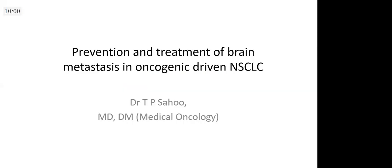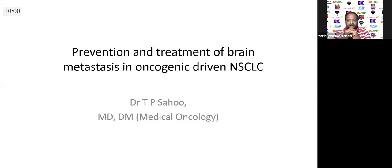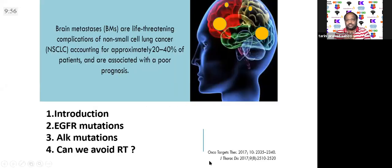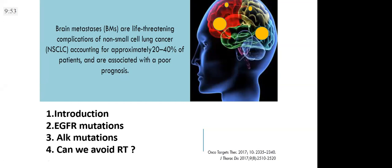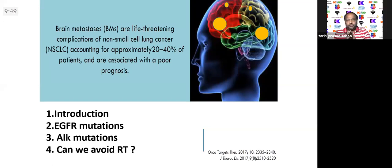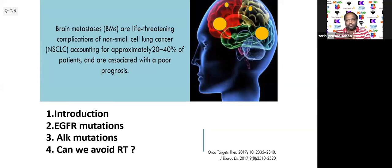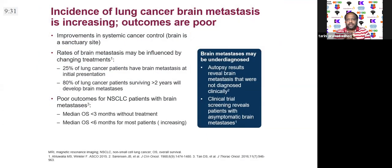Our next speaker is Dr. TP Sau. Good evening everyone — in the next 10 minutes I'll talk about the prevention and management post-radiotherapy for brain metastasis in oncogenic-driven NSCLC. I'll cover: an introduction, EGFR mutations, ALK mutations, and whether we can really avoid RT in a particular subset. The incidence of lung cancer with brain metastasis is increasing — brain is a sanctuary site because of the blood-brain barrier, preventing systemic drugs from reaching. Around 25 percent of lung cancers have brain metastasis at presentation, with rates increasing over a patient's lifetime to approximately three-quarters.